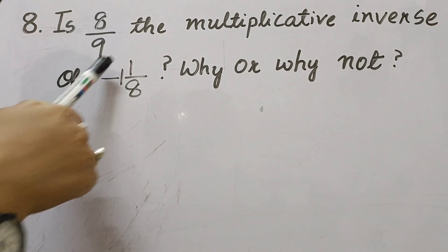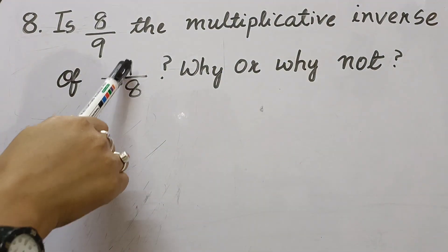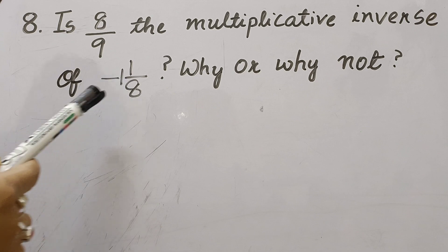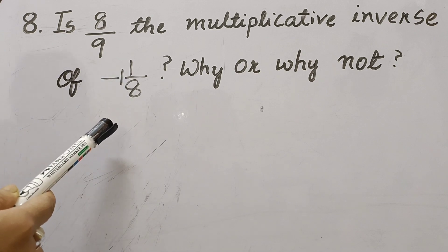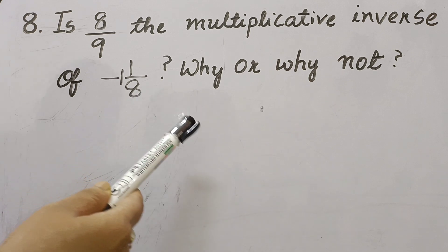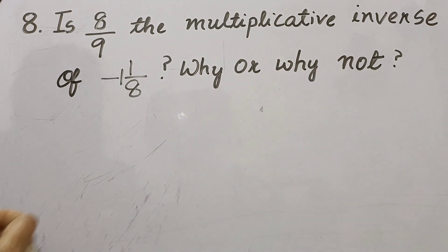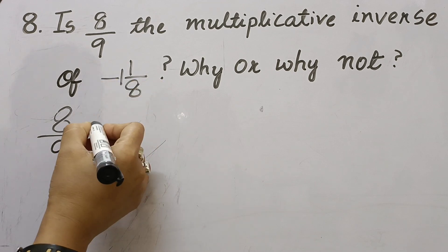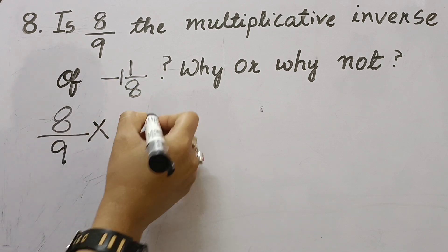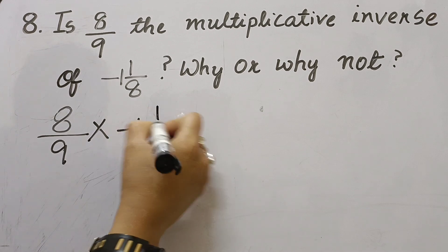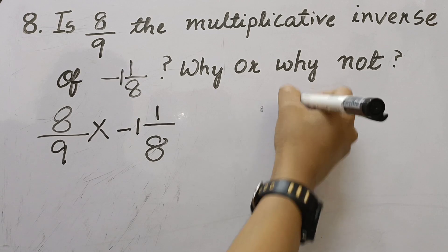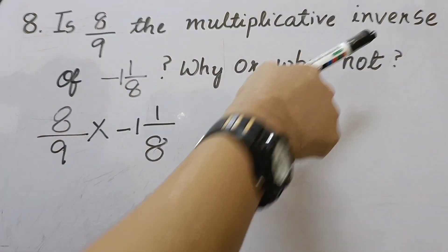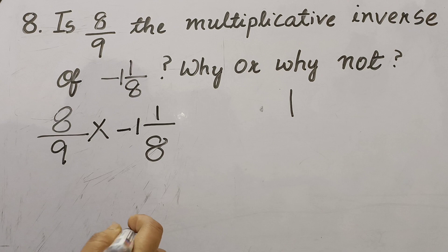Question 8: Is 8/9 the multiplicative inverse of -1⅛? Why or why not? To check, we multiply 8/9 by (-1⅛). If the result is 1, then yes it is the multiplicative inverse; if the result is not 1, then it is not the multiplicative inverse.